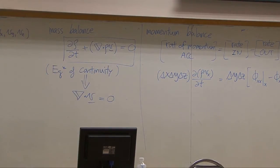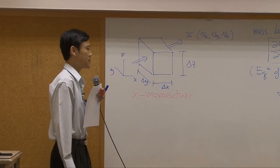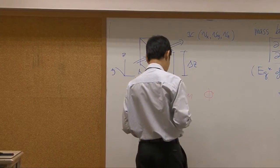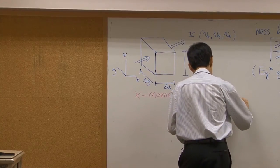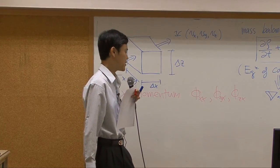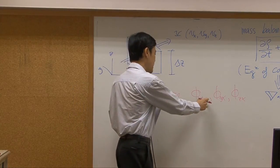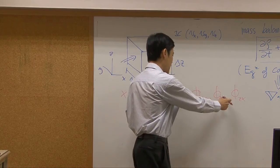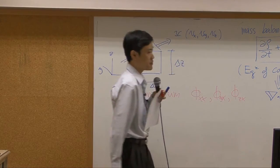I can write down momentum. But remember, momentum is a tensor. Tensors should have two directions. One direction is associated with direction of velocity or direction of the flow. The other will be associated with direction of the momentum transfer. So if I'm interested in x momentum first, x momentum is supposed to be consisting of three components: phi xx, phi yx, and phi zx. The second subscript is dedicated to direction of flow.